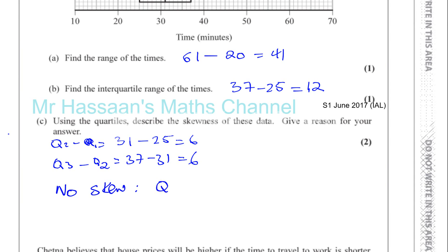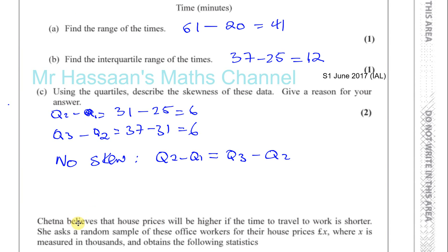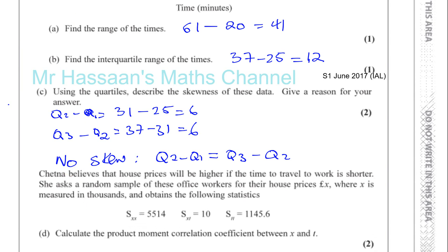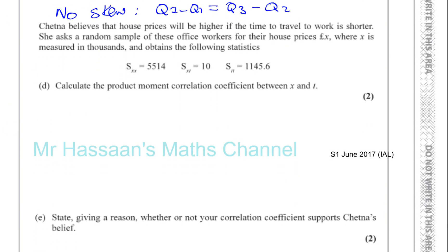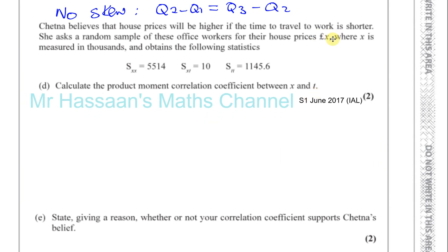Then it says, Chetna believes the house prices will be higher if the time to travel to work is shorter. She asked a random sample of these office workers for their house prices in pounds, which is X, where X is measured in thousands. And she obtains the following statistics. So T is the time to travel to work and X is the house price. We've got to find the PMCC coefficient between X and T. So we're going to go to the formula sheet, and the PMCC is given by this R, which is SXY over the square root of SXX times SYY. Now in this case, the Y is the T.